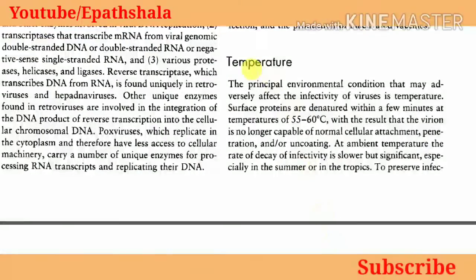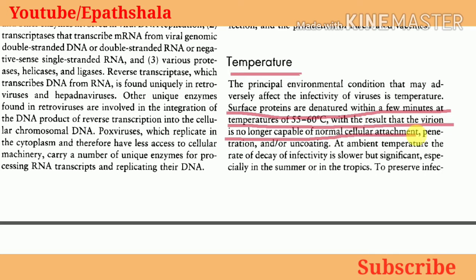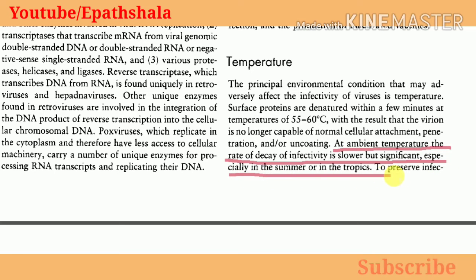Temperature. The principal environmental condition that may adversely affect the infectivity of viruses is temperature. Surface proteins are denatured within a few minutes at temperatures of 55 to 60°C, with the result that the virion is no longer capable of normal cellular attachment, penetration, and/or uncoating. At ambient temperature, the rate of decay of infectivity is lower but sufficient, especially in the summer or in the tropics.